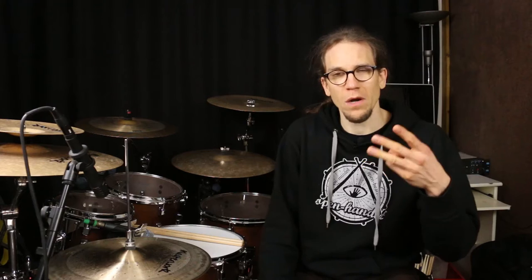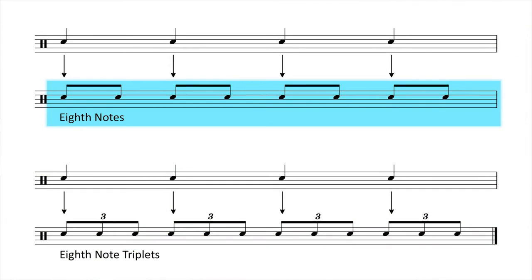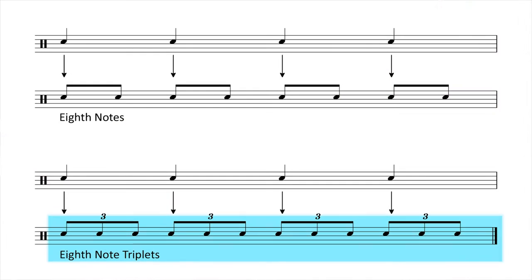Before we understand what a shuffle is, we first need to recapitulate what a triplet is, because there's often a misconception of what a triplet actually is. A triplet means that we divide our pulse, our beat, not by two but by three. When before we had eighth notes — for example one two three four — with triplets we have three strokes in the time where before we had two strokes. So one two three four.